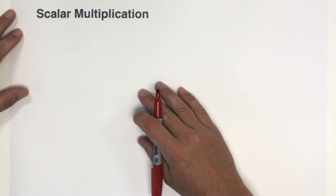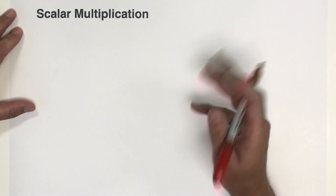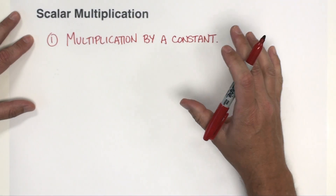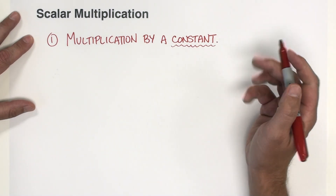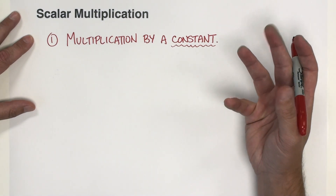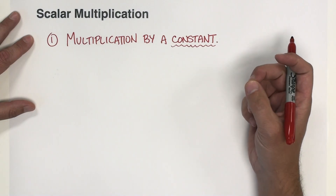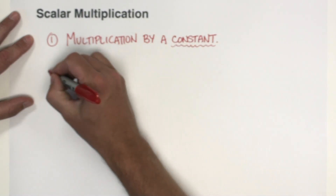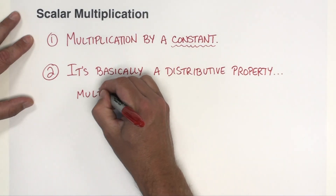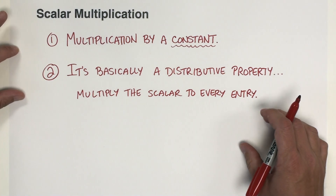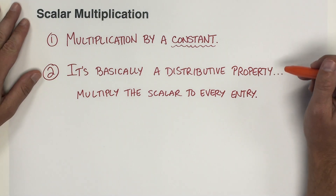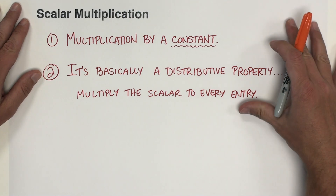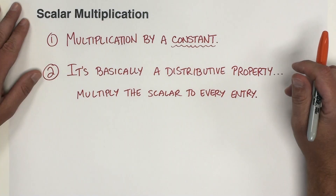Next we want to look at scalar multiplication. What is scalar multiplication? Scalar multiplication is basically just multiplying a matrix by a single number — a constant. The way we do a scalar product is you simply multiply that scalar to every entry within the matrix. It's essentially like a distributive property. Let's walk through a couple of examples of scalar products.